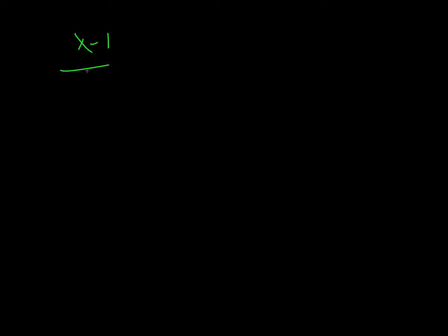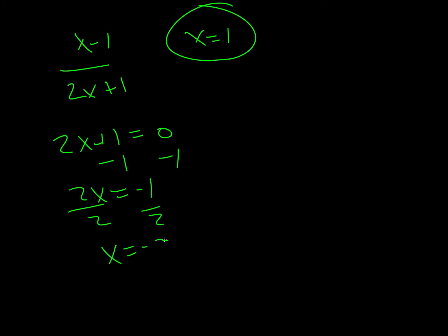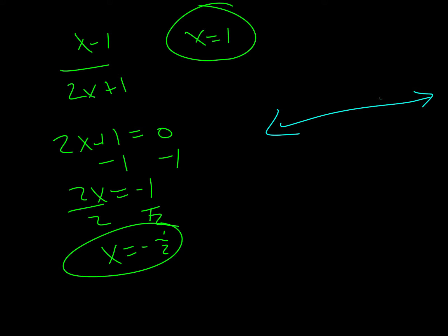Now they're just asking us to draw a sign diagram for this rational expression. We want to know where this goes to 0 — where this would cross the x-axis. You actually just use the top, so what would set the top equal to 0? Well, x equals 1 is where that's going to happen. Then we use the bottom — we set the bottom equal to 0 to tell us about any asymptotes. So we subtract 1: 2x equals negative 1, divide by 2, x equals negative 1 half. And that's going to be a vertical asymptote.